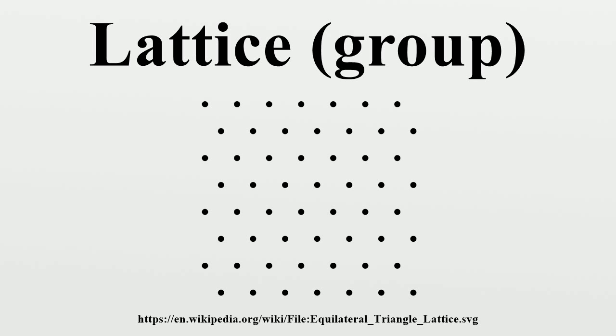As a group, a lattice is a finitely generated free abelian group and thus isomorphic to ℤⁿ.